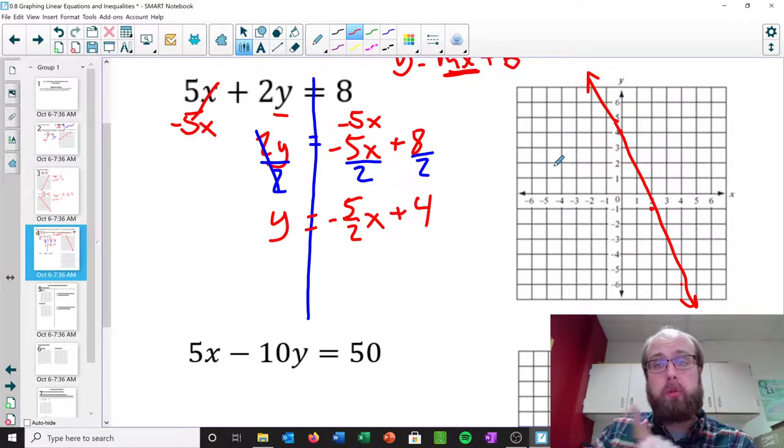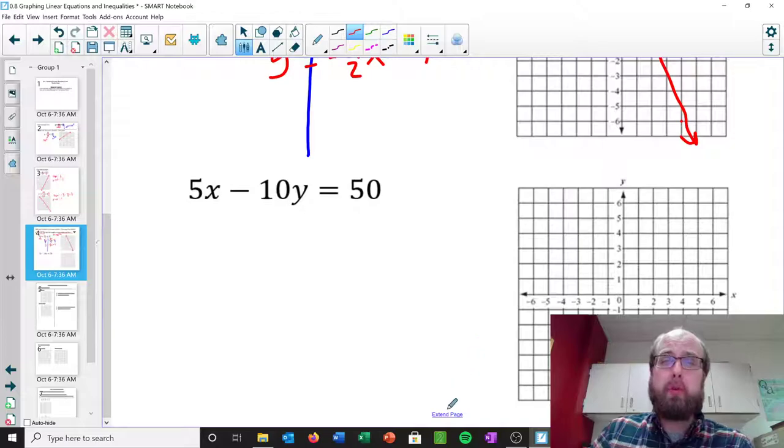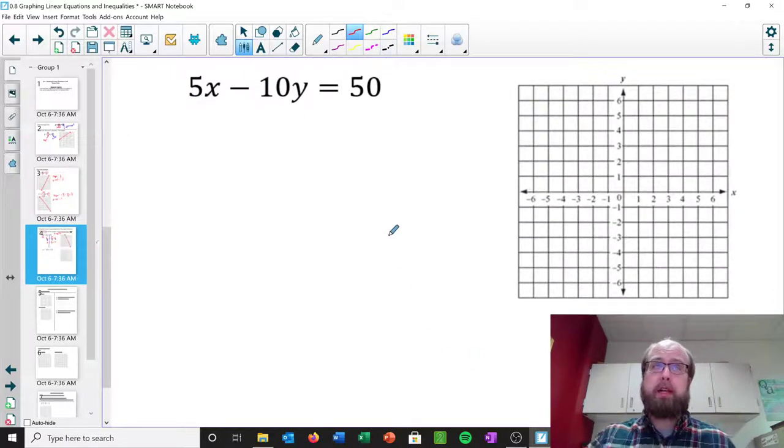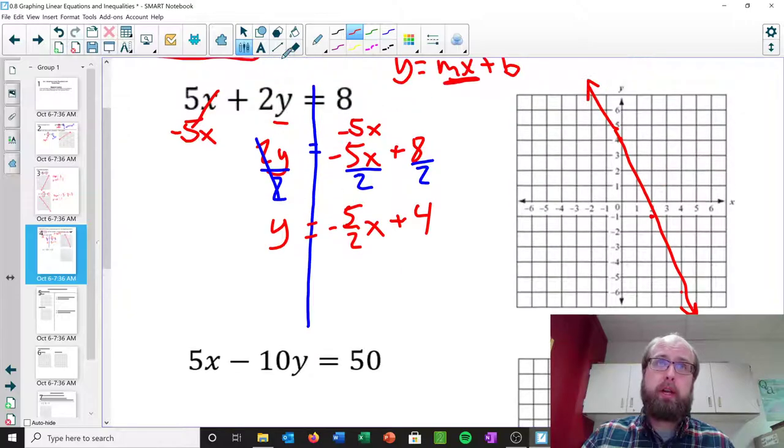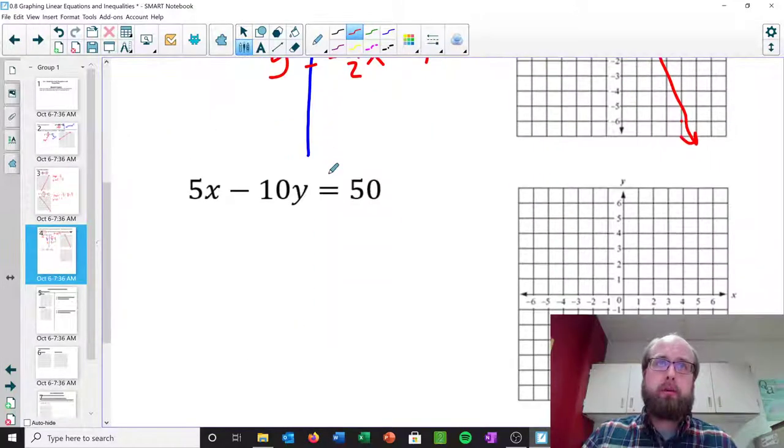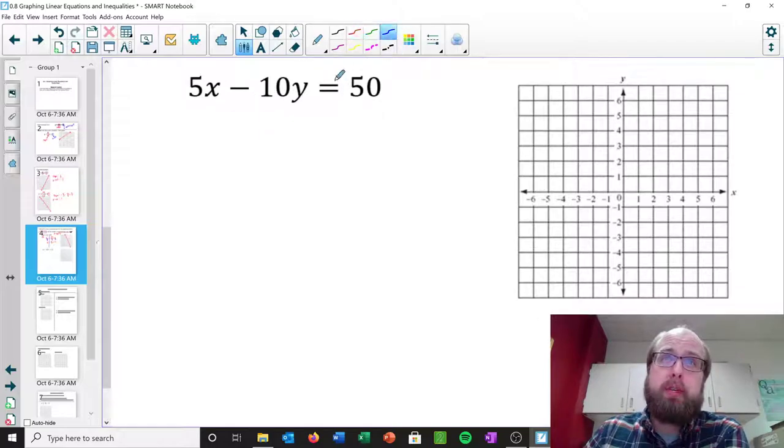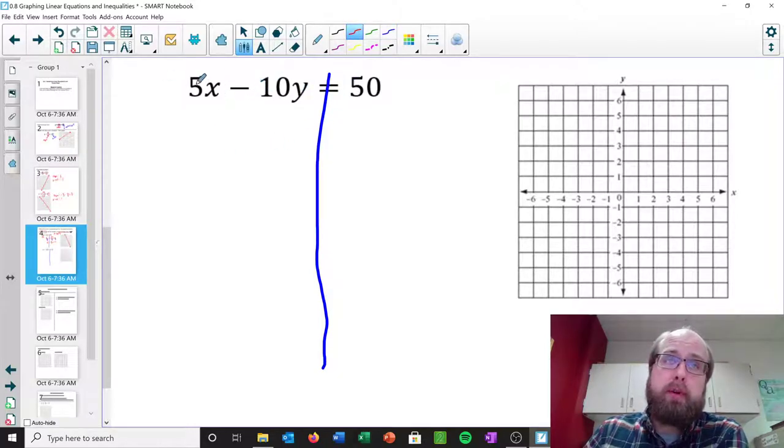Now I want to do one more here, because there is something with negatives we want to make sure that you guys remember. But that's the basic idea. We just want to go ahead, we want to get y alone. So let's do that here. This one I've got 5x minus 10y equals 50. Again, we want to get it in slope-intercept form, so we just want to get y by itself. So our first step, we've got to get these x's to the other side. So I'm going to subtract 5x from both sides.